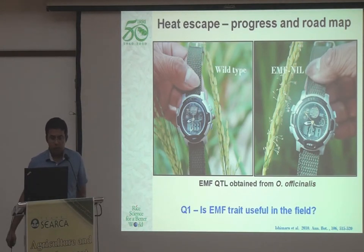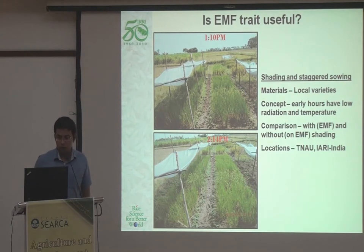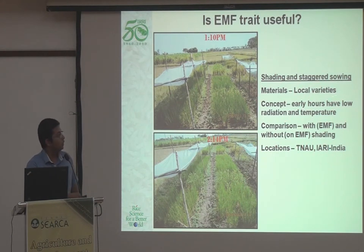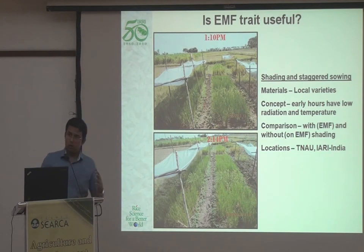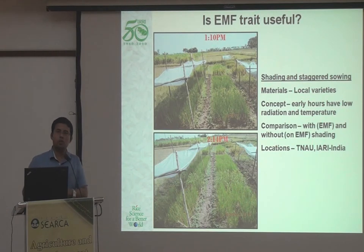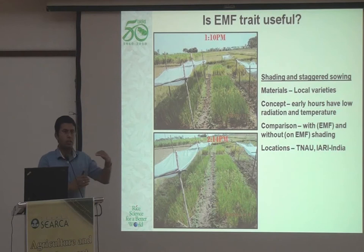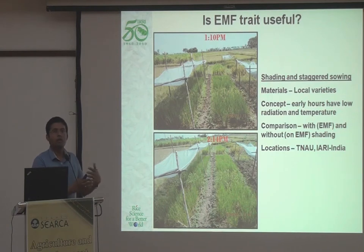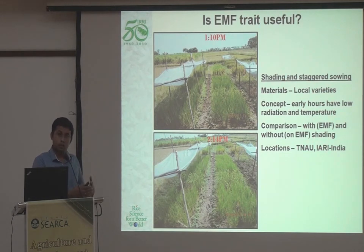Most of this work has been done at IRRI or in Japan, so we're not very sure if it's really useful under field conditions. Along with colleagues, we went to New Delhi in India where temperatures are really hot. We used a process called staggered sowing followed by shading. Staggered sowing ensures the same set of material flowers at different time intervals so that high temperatures coincide with flowering. Shading was used as a treatment because it cuts off radiation and temperature, creating a microclimate very similar to what happens at 7:30 or 8 o'clock in the morning. If this treatment is able to overcome sterility, then introducing the early morning flowering trait could be useful.